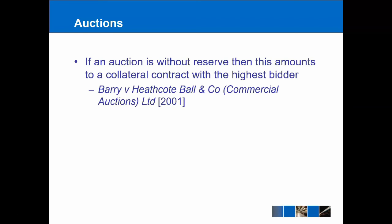In contract law, it becomes very interesting when items are sold without reserve — meaning the highest bid will win regardless. This amounts to a collateral contract between the auctioneer and the highest bidder: a promise that the highest bid will always be accepted. If a person makes the highest bid and the auctioneer refuses to sell, that person would be able to sue the auctioneer.